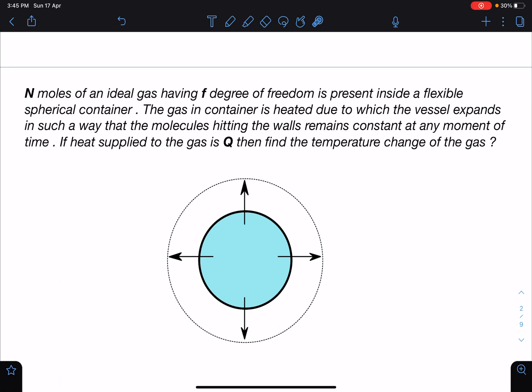The very first thing which should come to your mind after seeing this problem is heat supplied is giving delta T. They are asking, so somehow this is related to the molar specific heat of the process involved here because we can write Q equals N C process delta T, and delta T we have to find.